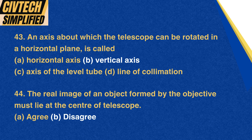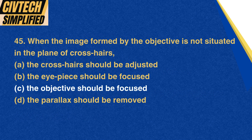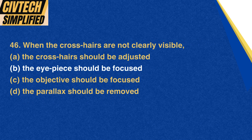Question 44: The real image of an object formed by the objective must lie at the center of the telescope. A. Agree, B. Disagree. Correct option: B. Disagree. Question 45: When the image formed by the objective is not situated in the plane of crosshairs: A. The crosshairs should be adjusted, B. The eyepiece should be focused, C. The objective should be focused, D. The parallax should be removed. Correct option: C. The objective should be focused. Question 46: When the crosshairs are not clearly visible: A. The crosshairs should be adjusted, B. The eyepiece should be focused, C. The objective should be focused, D. The parallax should be removed. Correct option: B. The eyepiece should be focused.